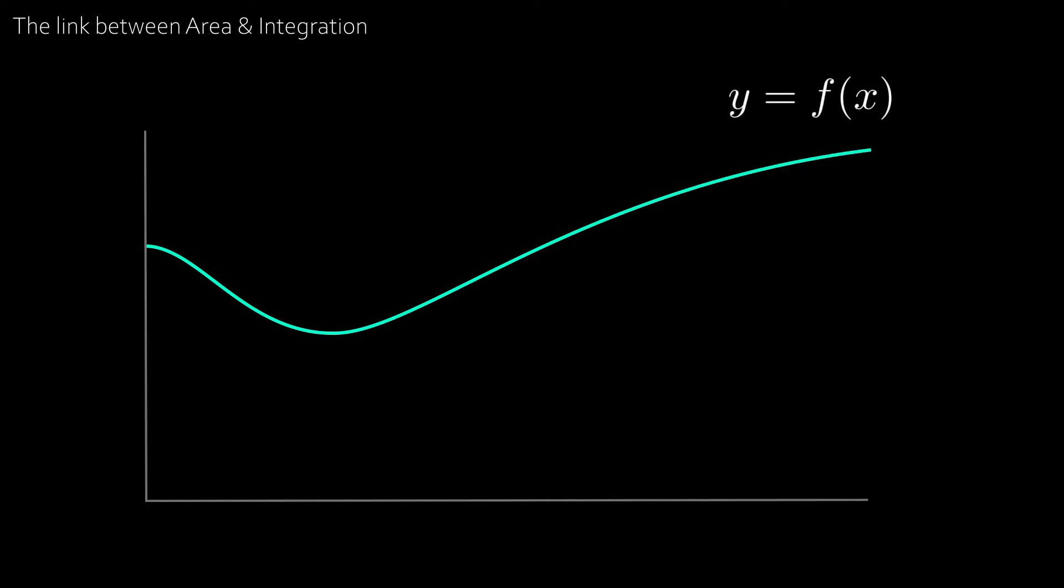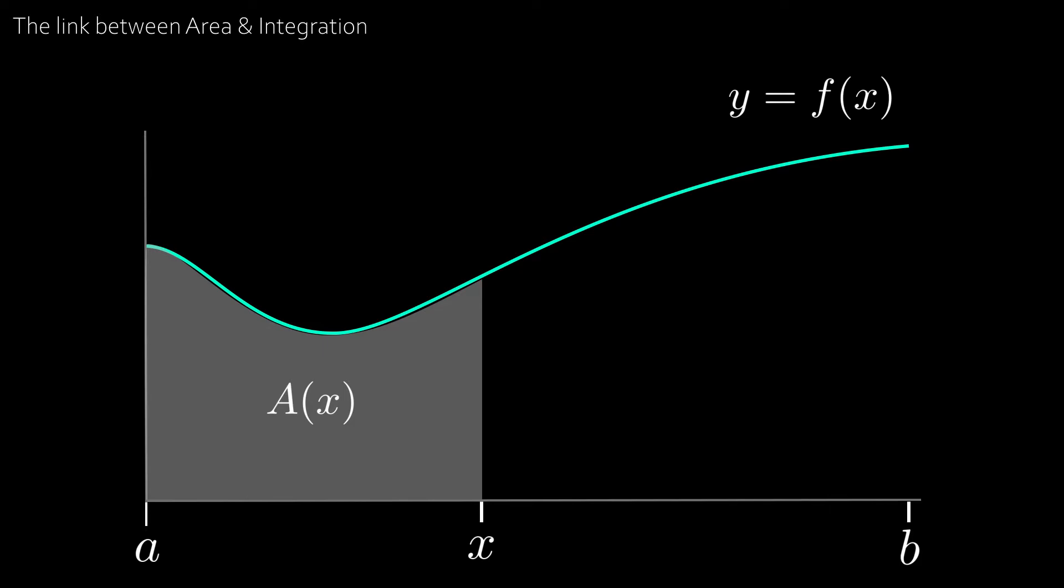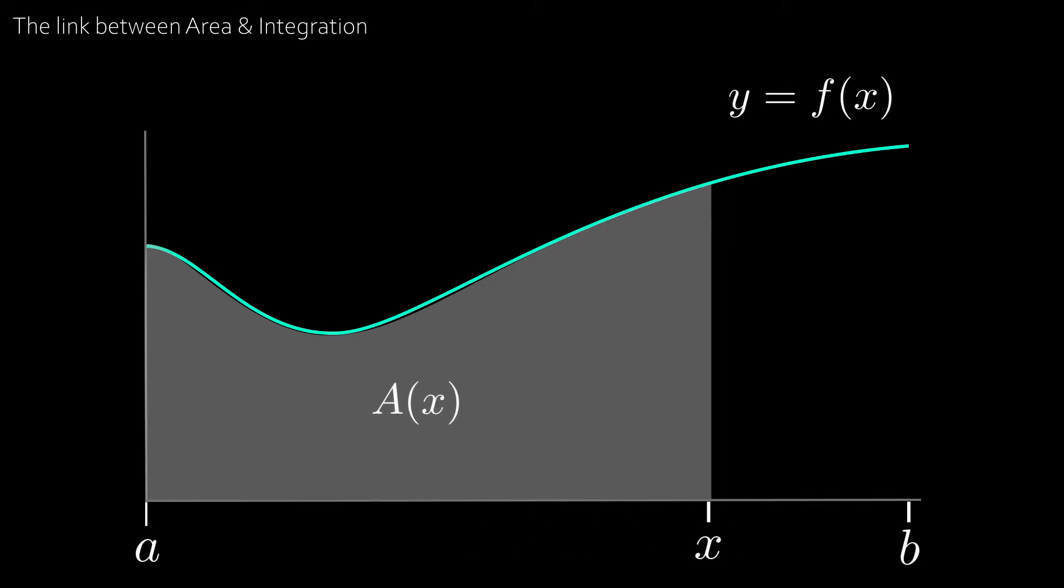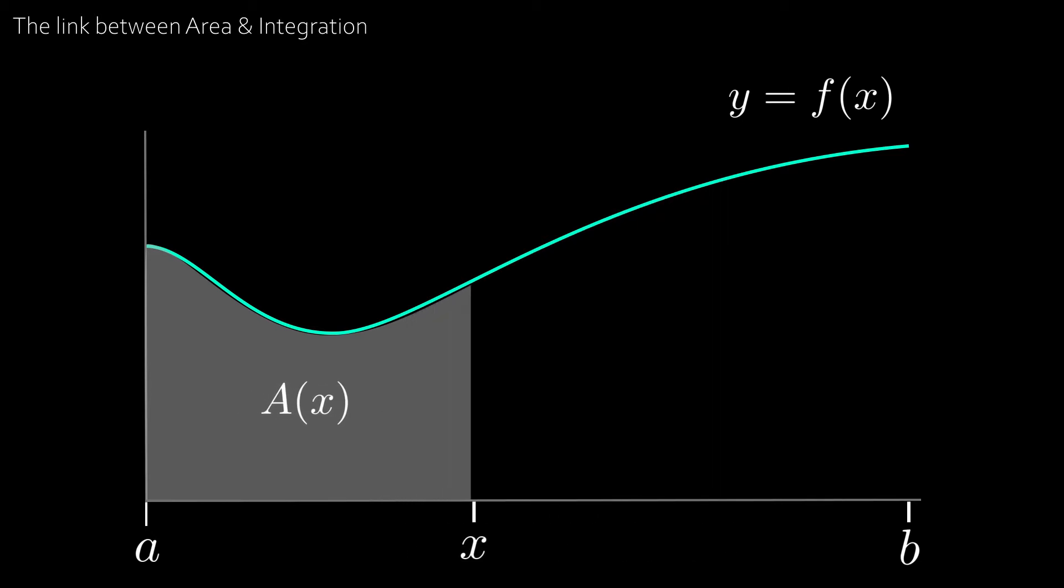Well let's say you had a graph of a function f of x and let's take the points a and b and let x be a value in between a and b. And let the function capital A of x be the area under the curve between points a and x. And we see that for different values of x we get a different value for the area.